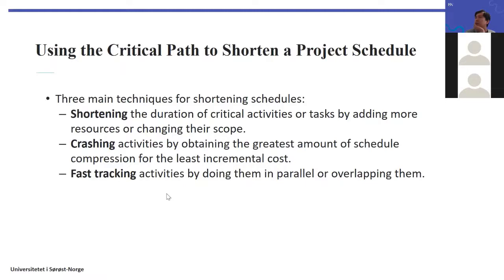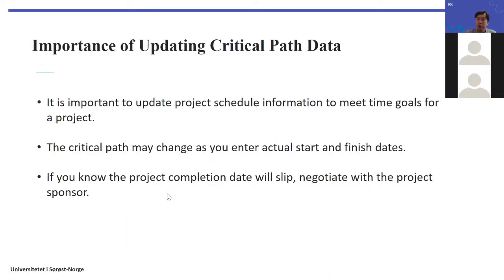There are three main techniques for shortening the schedule, all focusing on the critical path. First, shorten the durations of activities on the critical path by adding more resources or changing their scope. Second, crashing activities — achieving the greatest schedule compression for the least incremental cost. Third, fast-tracking activities by doing them in parallel or overlapping them. Note that while useful in practice, these techniques may make your Gantt chart look messy. You should also update your Gantt chart frequently as well as update the critical path data.